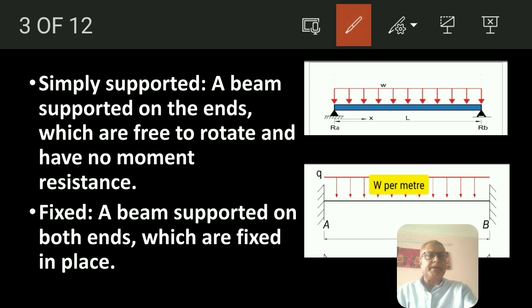Simply supported beam, as you can see in this picture, both ends are simply supported. What happens is that the ends are free to rotate. If ends are free to rotate, there will be no moments generated at both the ends of simply supported beam.